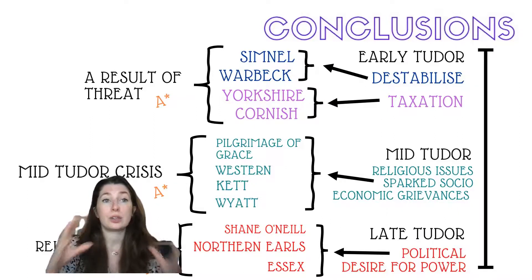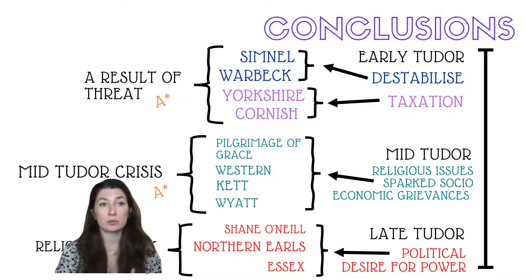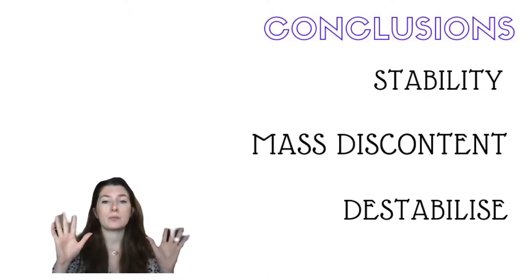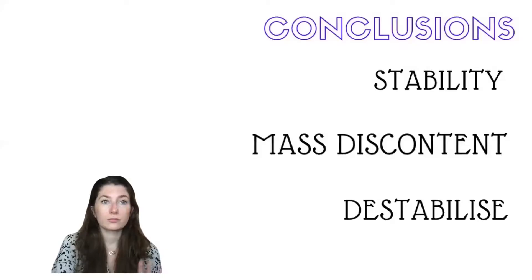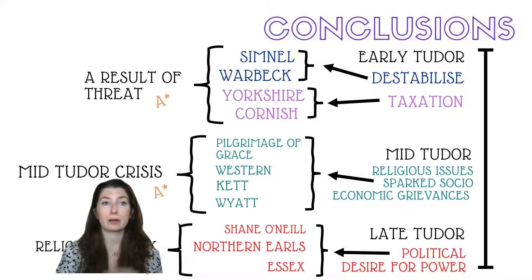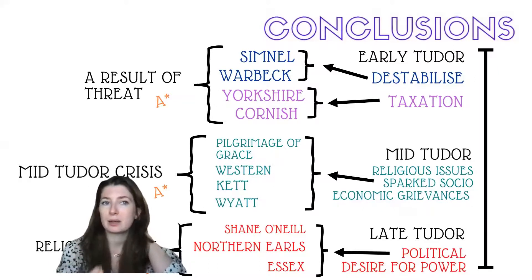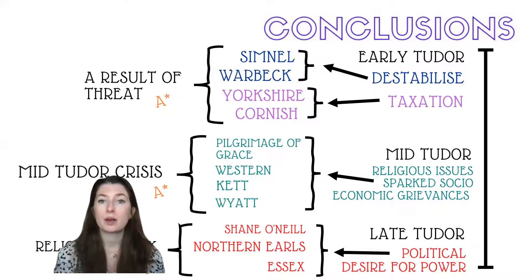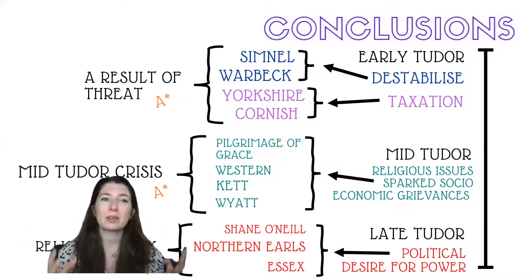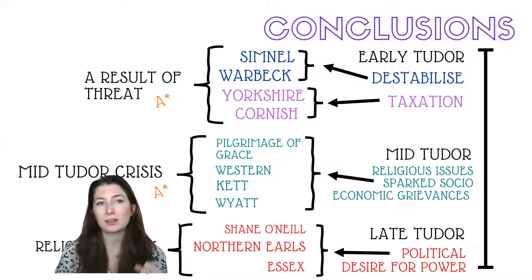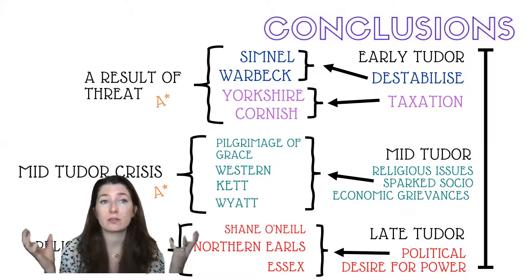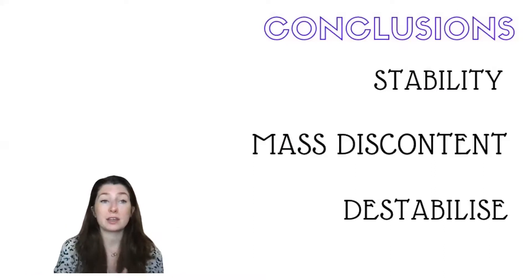Looking at the trajectory of rebellions across the whole period — as shown on the timeline here — what we really see is a growing stability of the Tudor regime. Rebellions are becoming less about mass discontent or a desire to destabilise the dynasty from the populace, and more about small political power-grabbing factional issues. It shifts from discontent of a mass group to discontent of a small number, and that's a very good way of remembering how things change across the period.